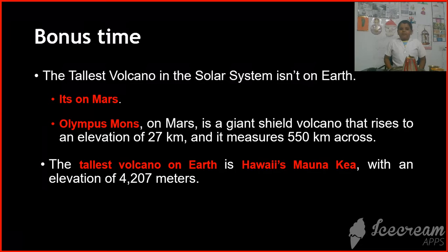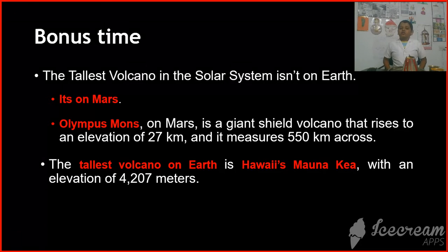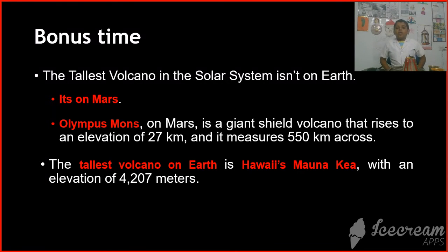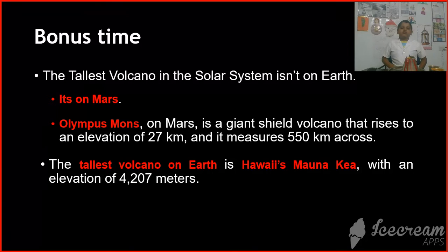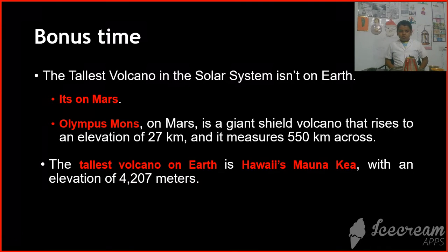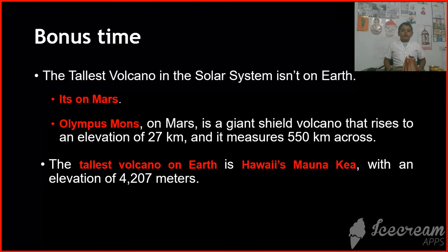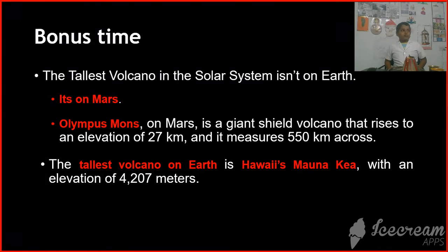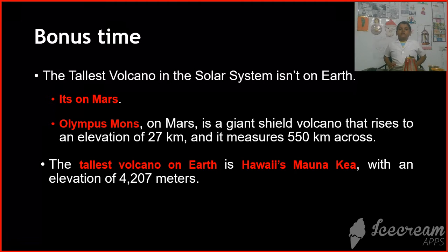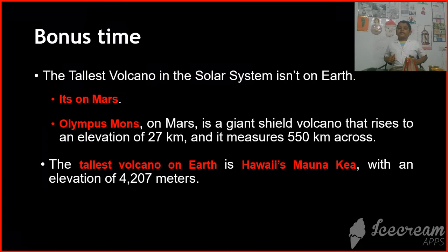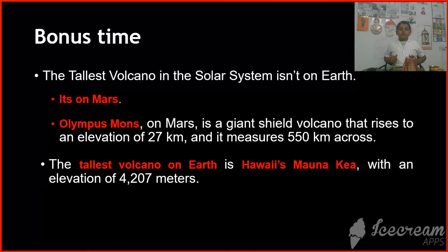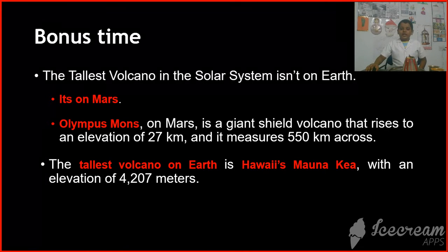Bonus time! The tallest volcano in the solar system isn't on Earth — it's on Mars. It's called Olympus Mons. The tallest volcano on Earth is Mauna Kea in Hawaii.